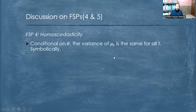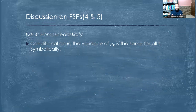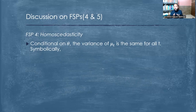FSP4 is homoscedasticity. It means that across different samples the data is spread with homogeneity — the same type of representation is present in the observations. Technically, conditional on theta, the variance of the error term is the same for all t, meaning there is stability in the variance.